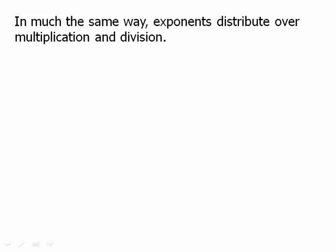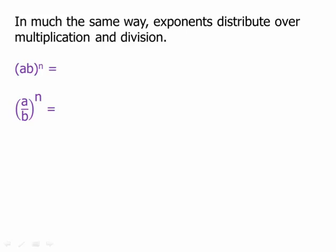Much in the same way, exponents distribute over multiplication and division. So if I have (a times b) to the n, or (a divided by b) to the n, I can distribute the exponent to each factor. So (a times b) to the n equals a to the n times b to the n. And (a divided by b) to the n equals a to the n divided by b to the n.